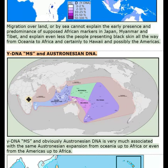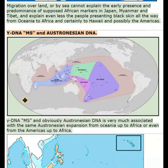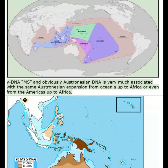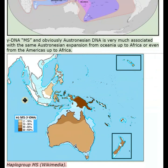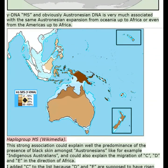Migration overland or by sea cannot explain the early presence and predominance of supposed African markers in Japan, Myanmar, and Tibet, and explains even less the people presenting black skin all the way from Oceania to Africa, and certainly to Hawaii, and possibly the Americas.